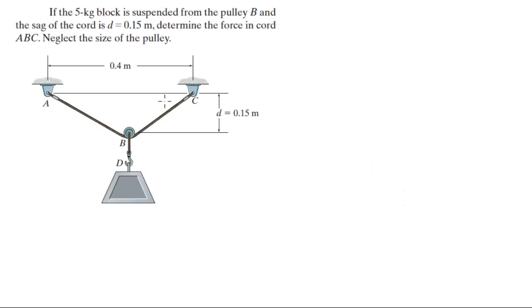All right guys, now we're going to do this problem. If the 5 kilogram block is suspended from pulley B and the sag of the cord is 0.15 meters in length, determine the force in cord ABC. Neglect the size of the pulley.